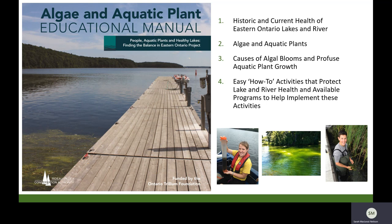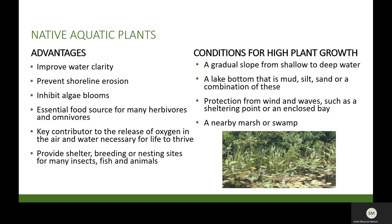The manual also provides information on the role aquatic vegetation plays in the ecosystem, what different species you are likely to find in local lakes, some of the causes of algal blooms and nuisance plant growth, actions that can be taken to protect lake and river health, as well as resources to help landowners or community groups to implement various types of projects. The next few slides will look at the different types of aquatic plant communities and the role they play in the lake ecosystem.